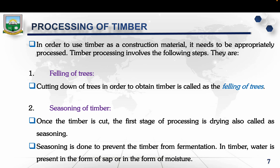Once the tree has been felled, the timber needs to be dried — a process known as seasoning. This step is very important because fresh-cut wood contains a high level of moisture, mostly in the form of sap. If not properly dried, the wood can undergo fermentation, shrinking, or decay. Seasoning reduces the moisture content, thereby stabilizing the timber and improving its strength and durability. Depending on the timber species and end use case, seasoning can be done naturally in open air or through controlled kiln-drying.